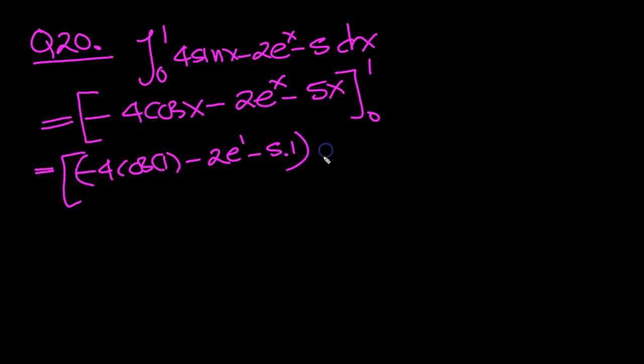Take away the bottom value. So, minus 4 cosine of 0, minus 2 e to the 0, minus 5 times 0. Close that bracket, close the square bracket.